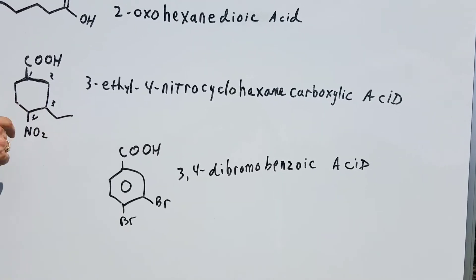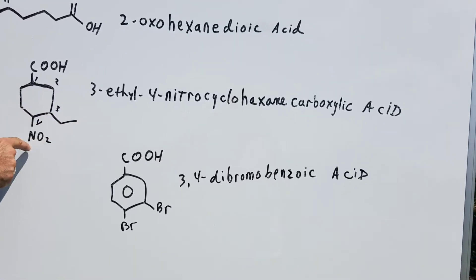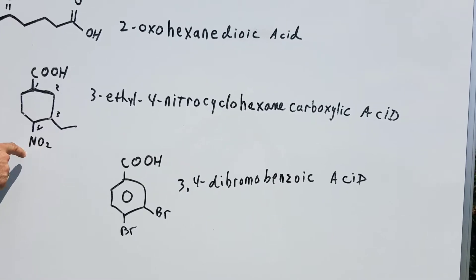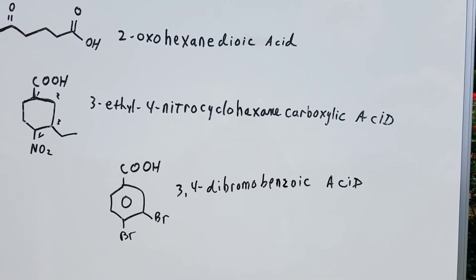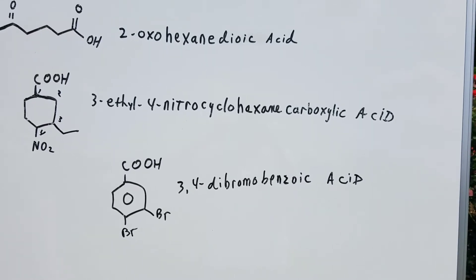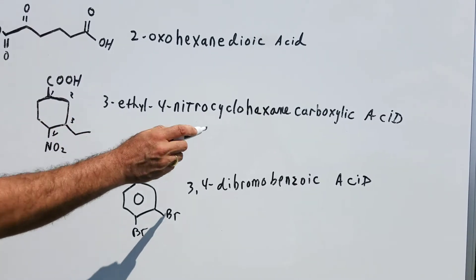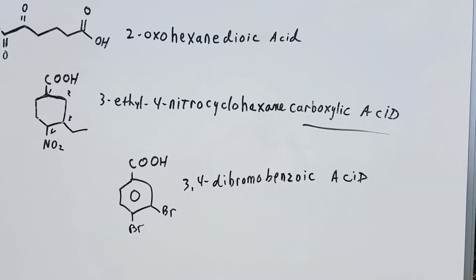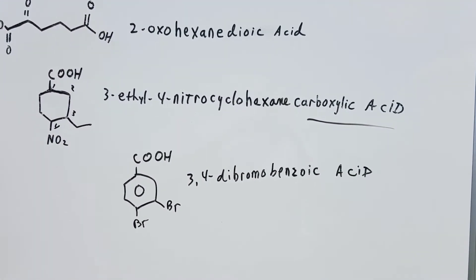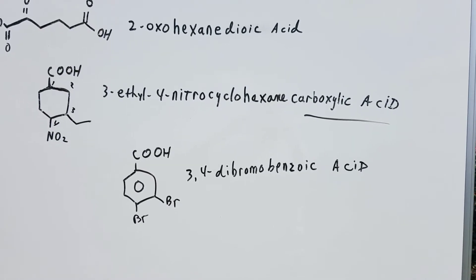And then in alphabetical order, we see there's an ethyl on three and a nitro on four. So we would call this 3-ethyl-4-nitro-cyclohexane and then add the suffix carboxylic acid. So this would be 3-ethyl-4-nitro-cyclohexane carboxylic acid.